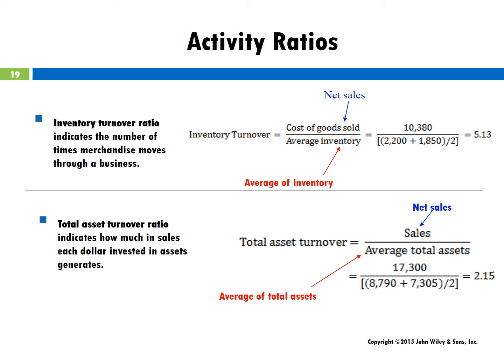The asset turnover ratio tends to be higher in consumer products industries, which have a smaller asset base but high sales volume. Firms with large asset bases, like telecommunications and utilities, will have a lower asset turnover.